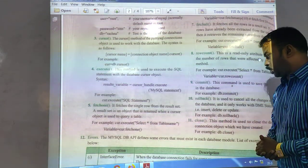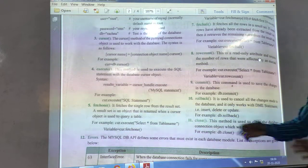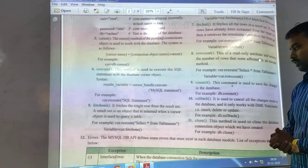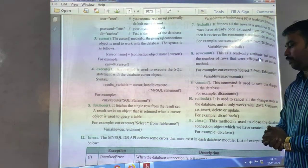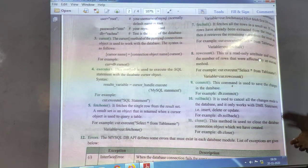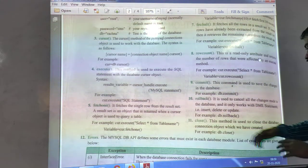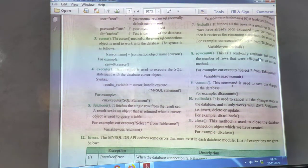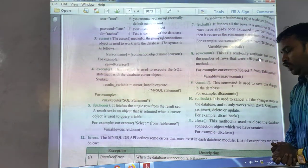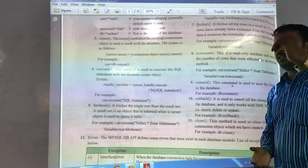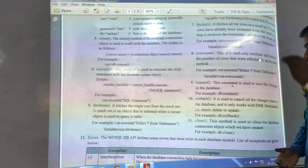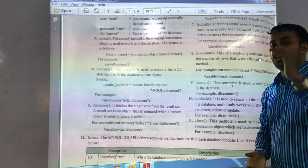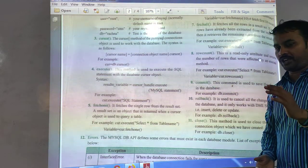There's the rollback, another very important command from the transaction section. And lastly, I discuss about the close method. After the connection has been established, at the end you must close the connection or close the database connectivity. So this method is used to close the database connection object which we have created. You can create at the time when you create the table, but at the end you must close the database connection. It is the most important thing.